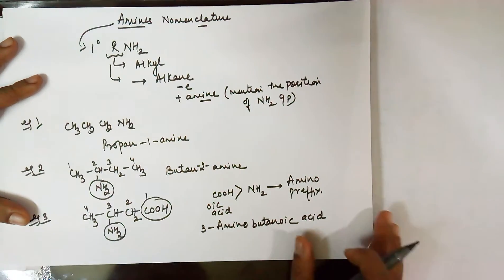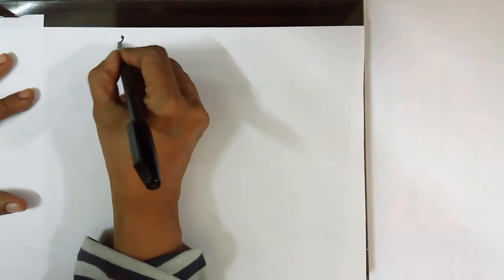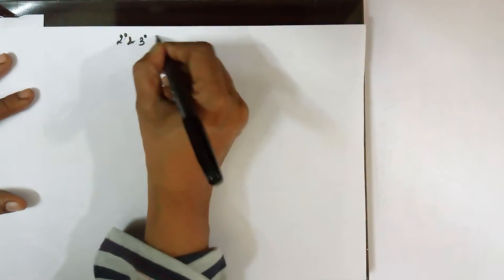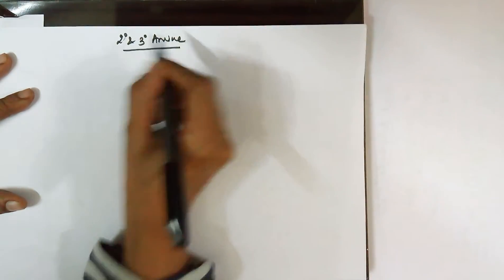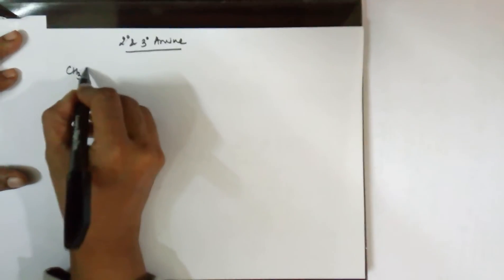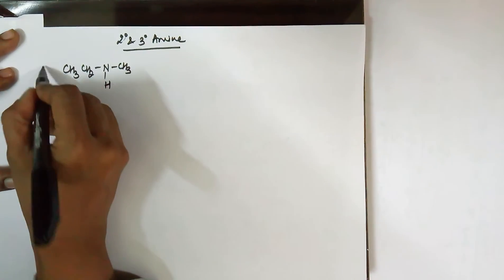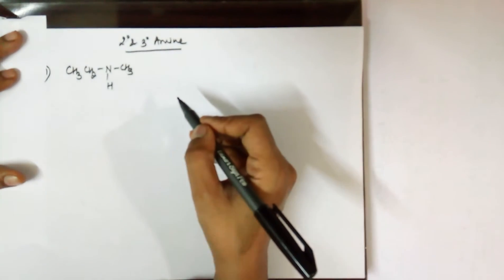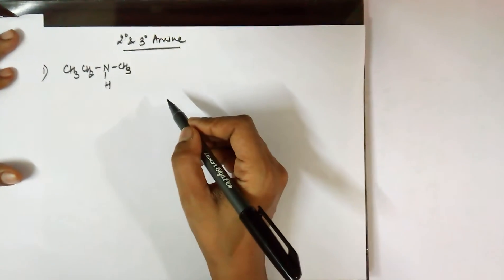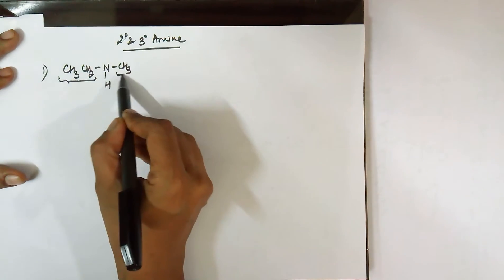Moving on to the nomenclature for 2° amines. In case of a 2° or a 3° amine, the nomenclature is slightly different. For example, I'm taking the example of this particular compound. In this compound, there are two sides of carbons. I've got one alkyl group as ethyl, the other alkyl group as methyl.